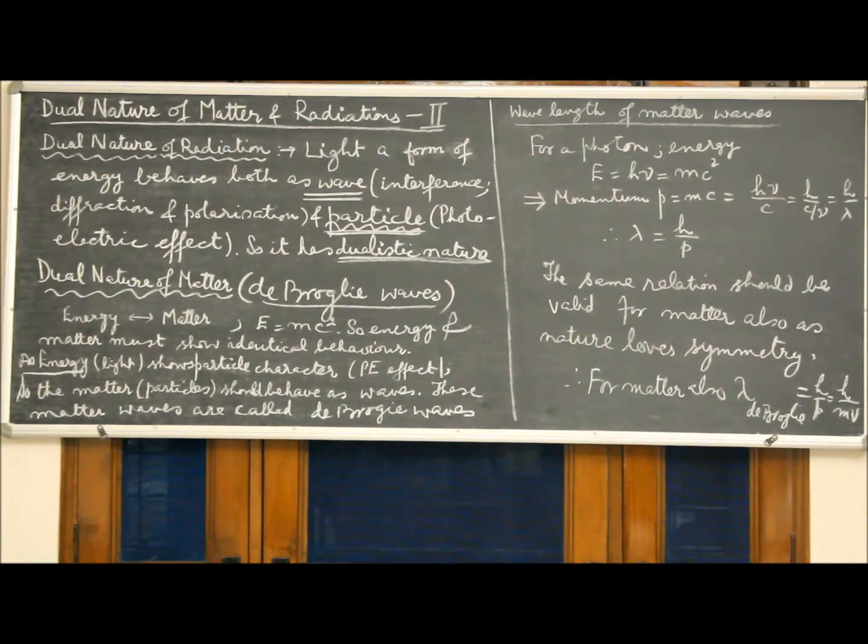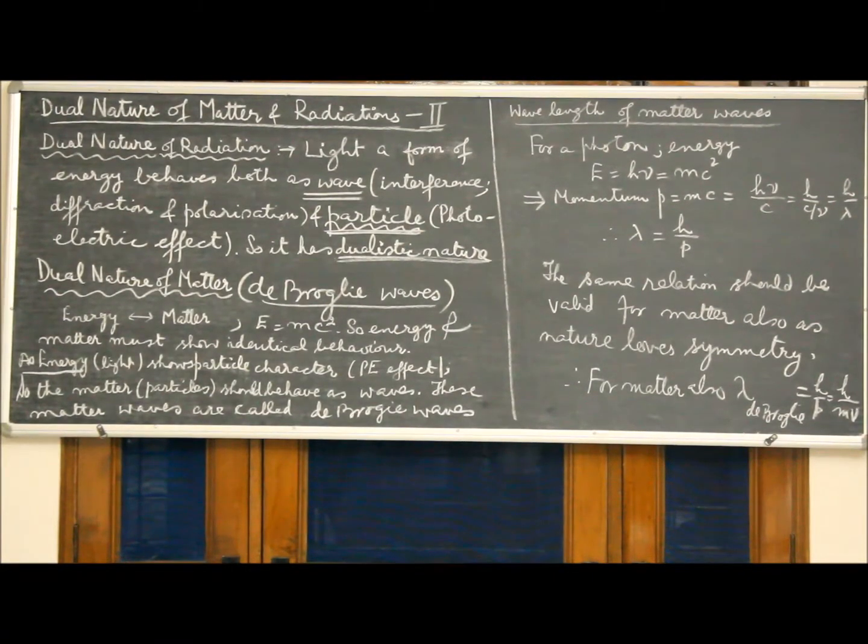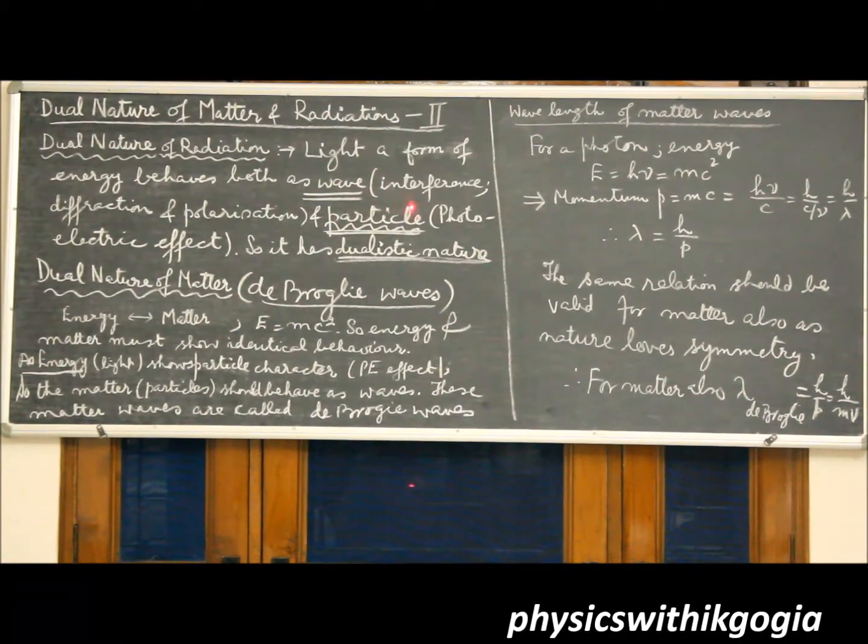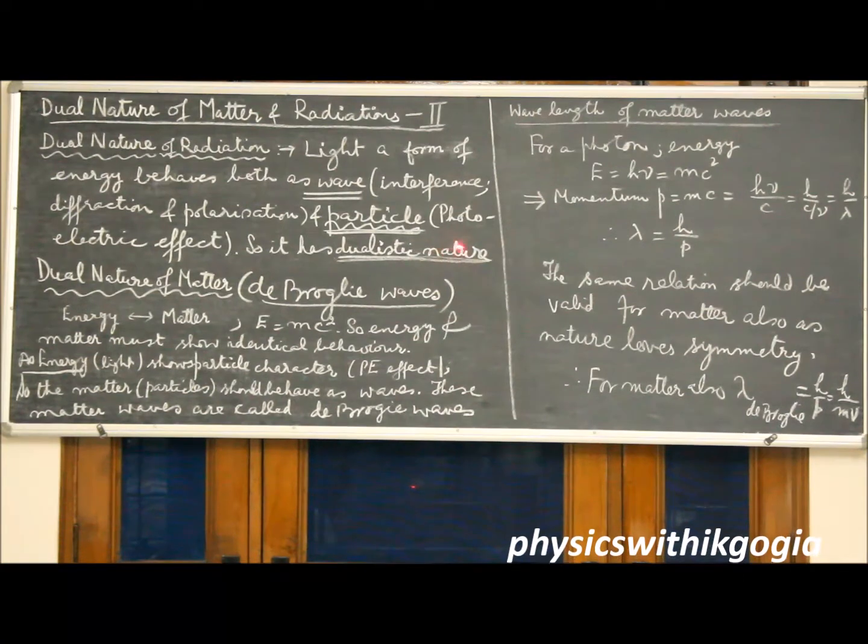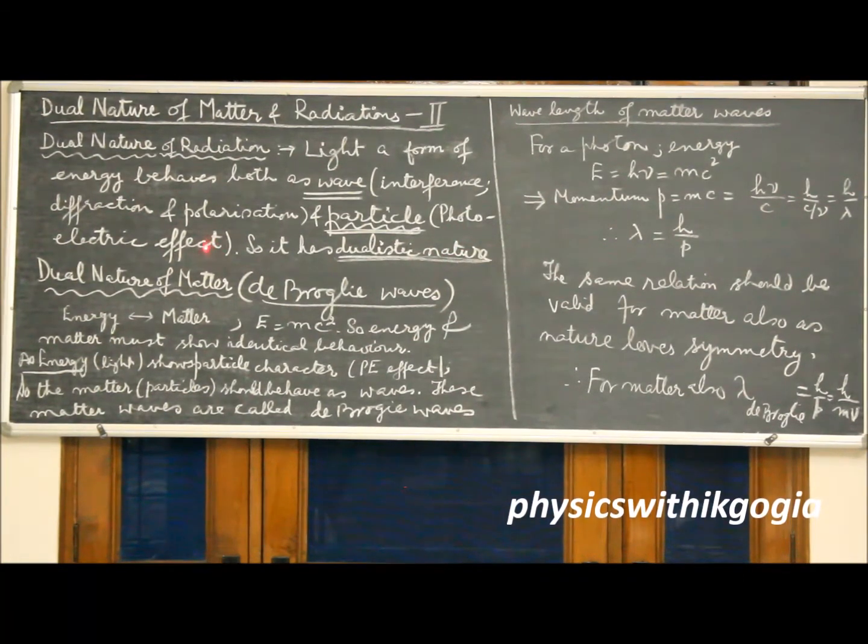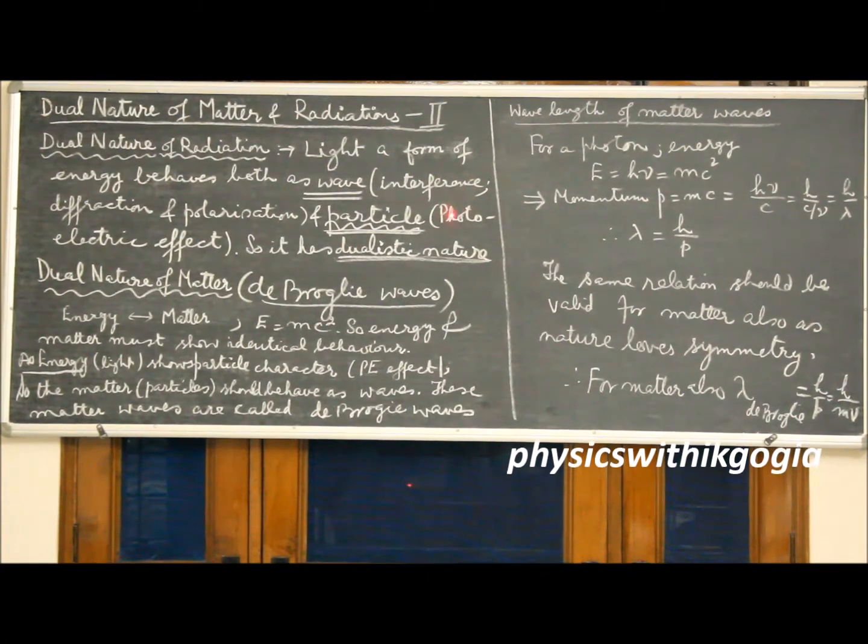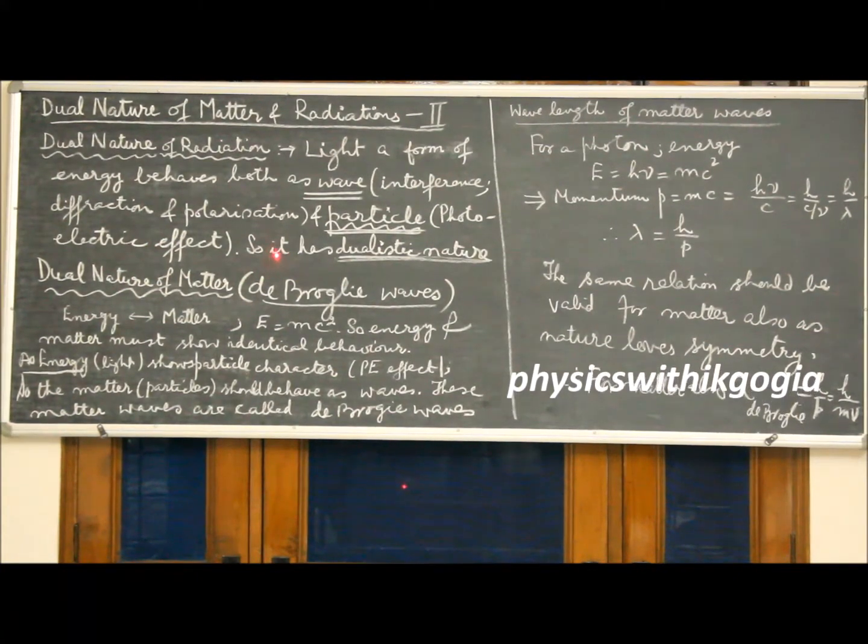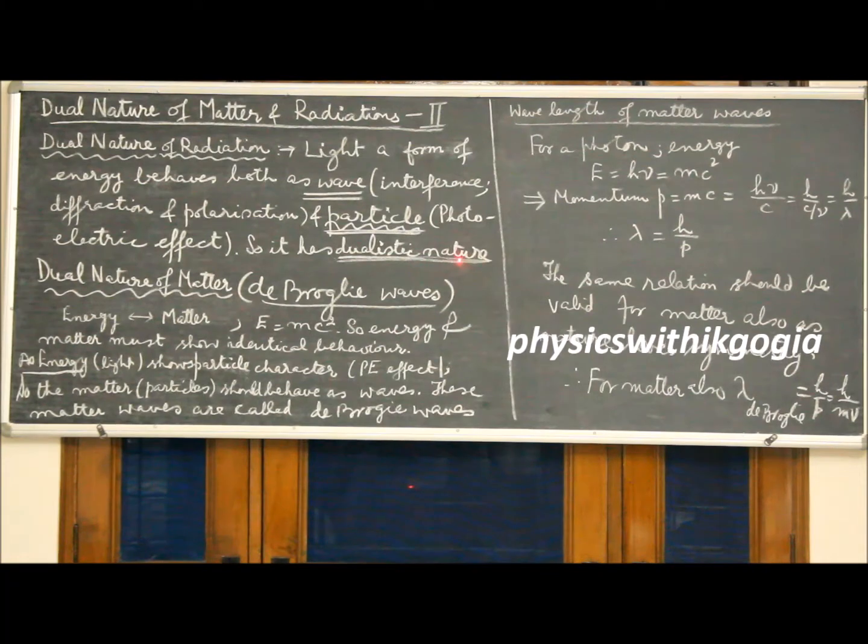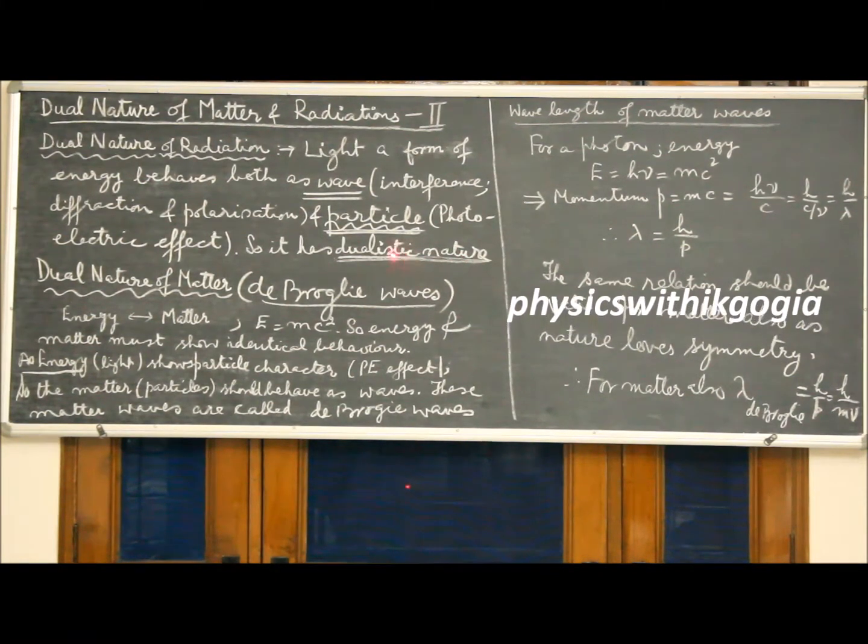Having studied photoelectric effect and properties of the photon, we are now in a position to talk about the dual nature of light or radiation. We know that light is a form of energy and it behaves both as waves as well as particles. Waves in the phenomena of interference, diffraction, and polarization. It behaves as particles in phenomena of photoelectric effect because we have seen this is a phenomena which cannot be explained on the basis of wave theory. So the radiation or light or energy has dualistic nature, acting both as particles as well as waves.